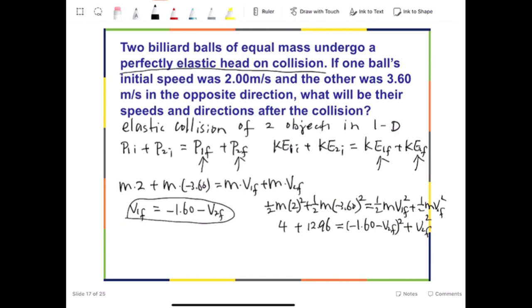So if we reorganize this equation, you can do that on your own, but it's not hard. I'm going to write this equation after reorganization. It becomes v₂f squared plus 1.6v₂f minus 7.2 equals 0. Now, this is a typical quadratic equation.